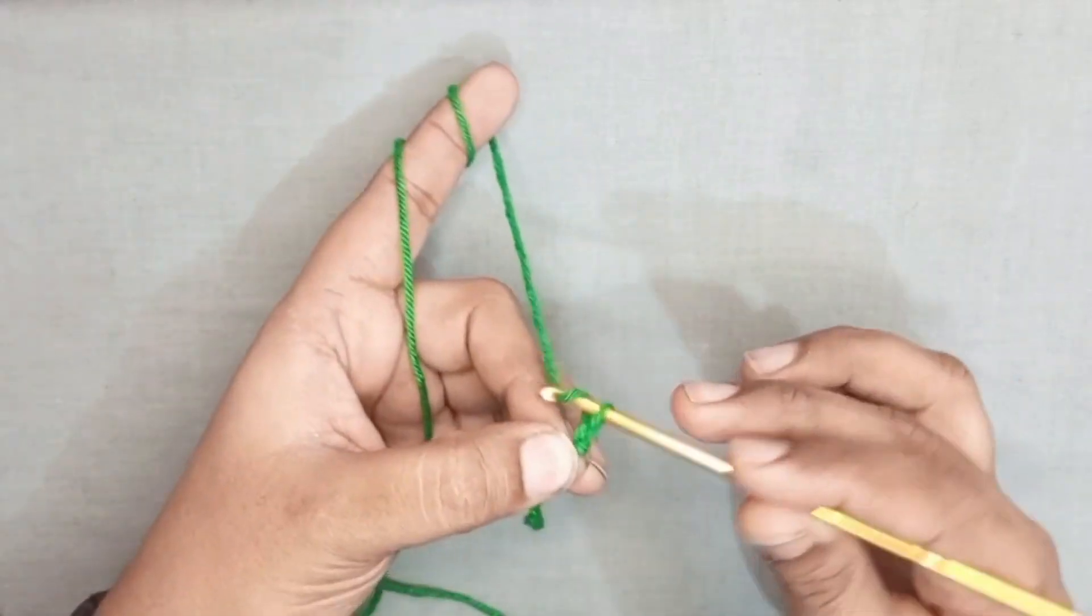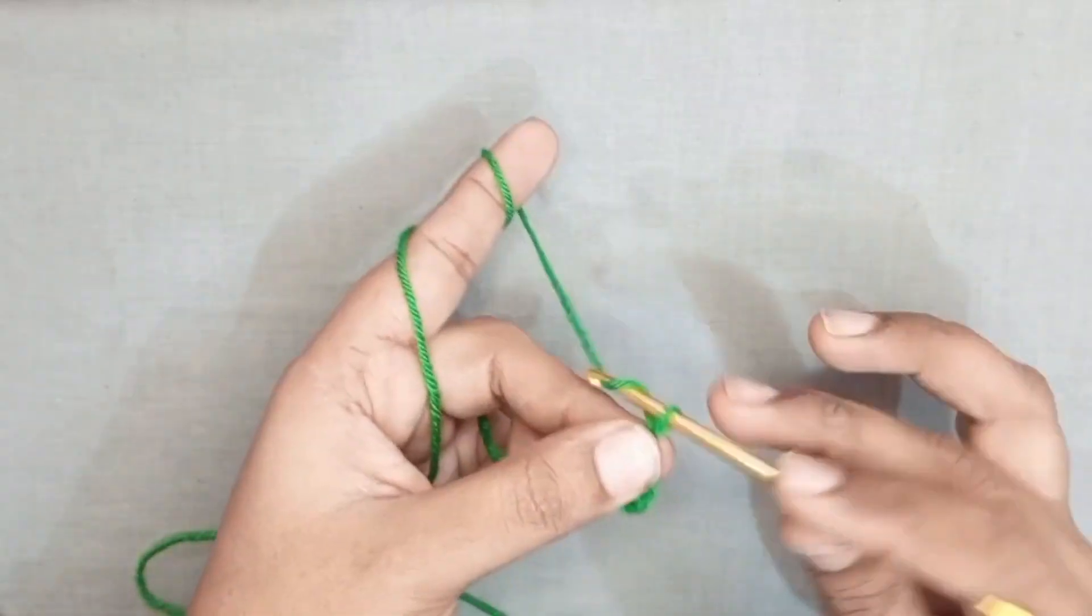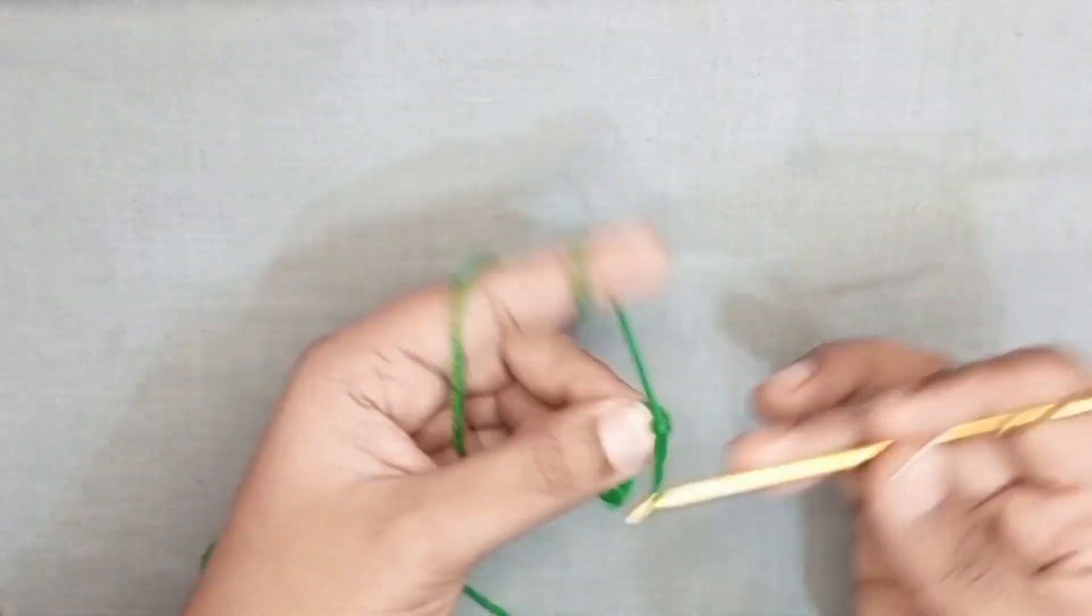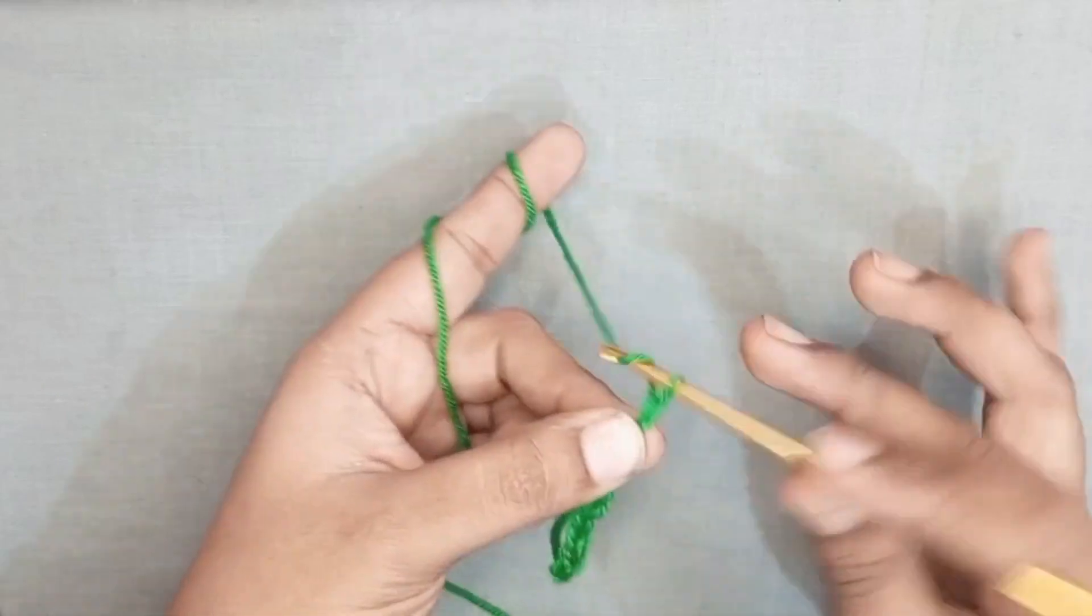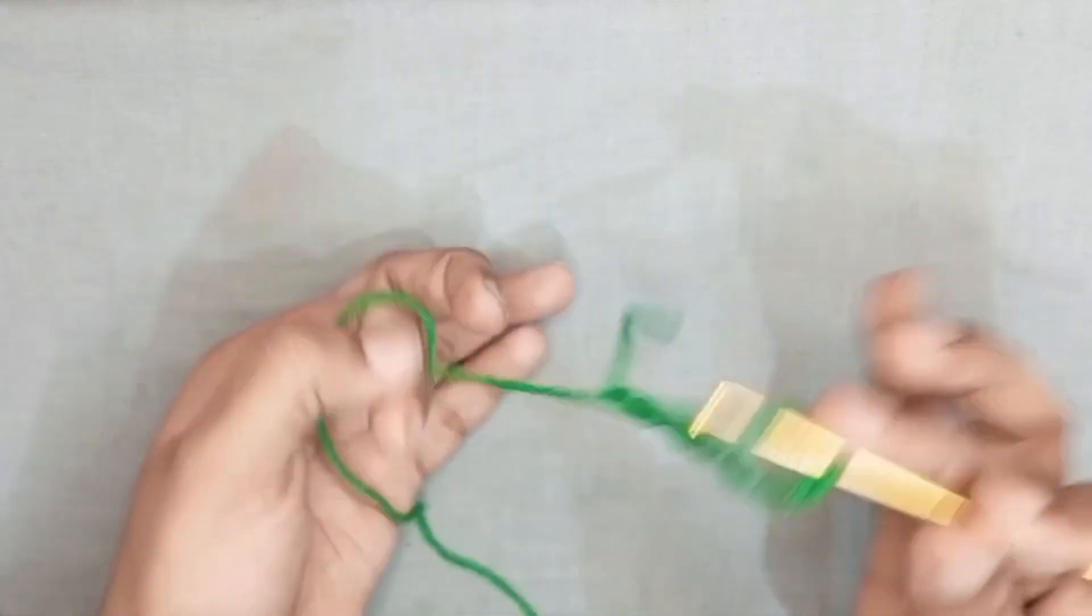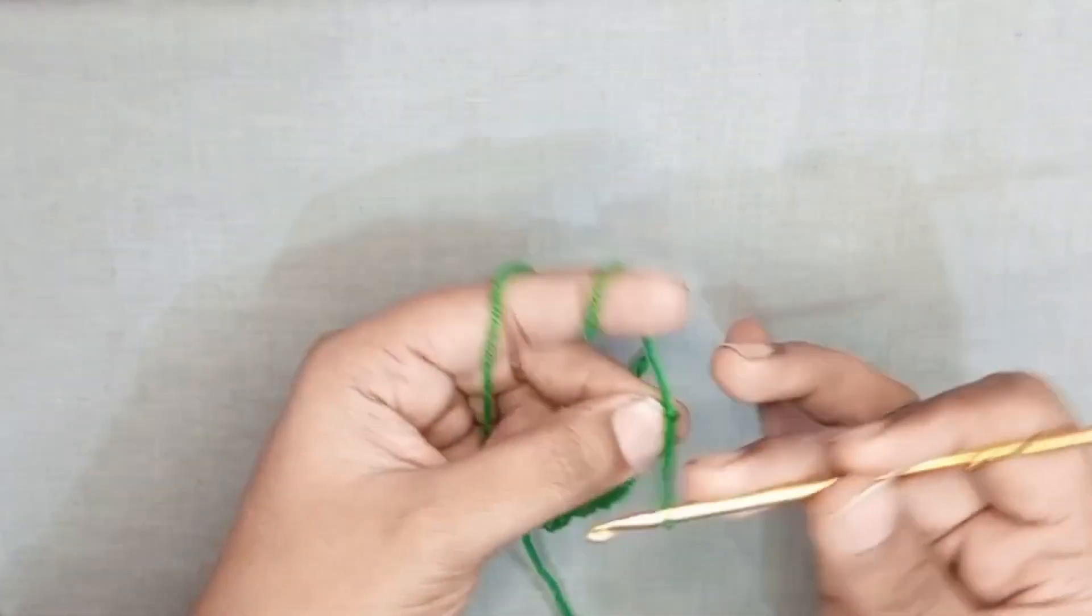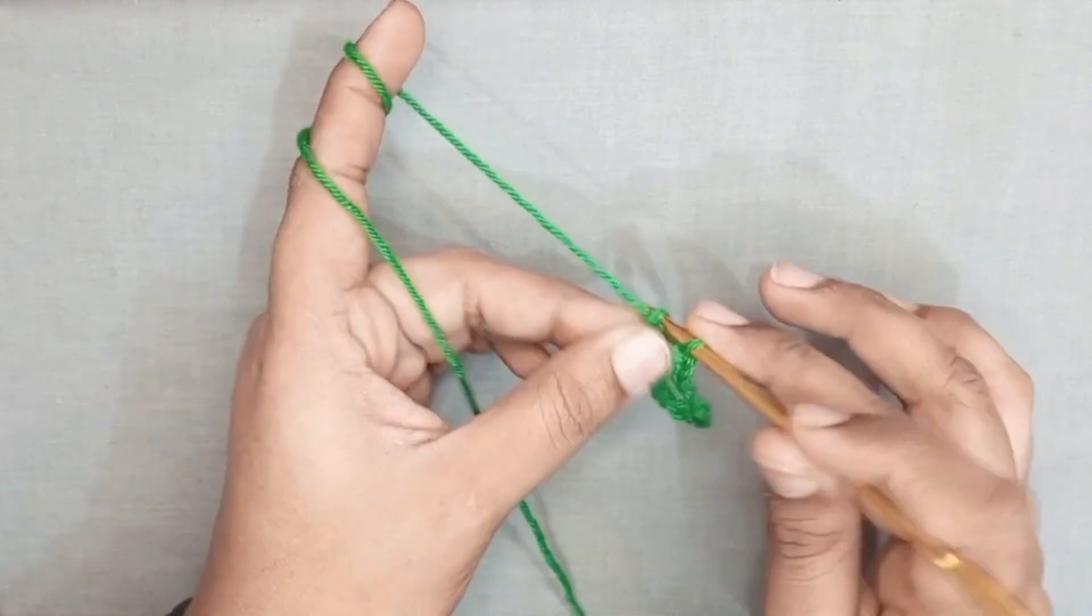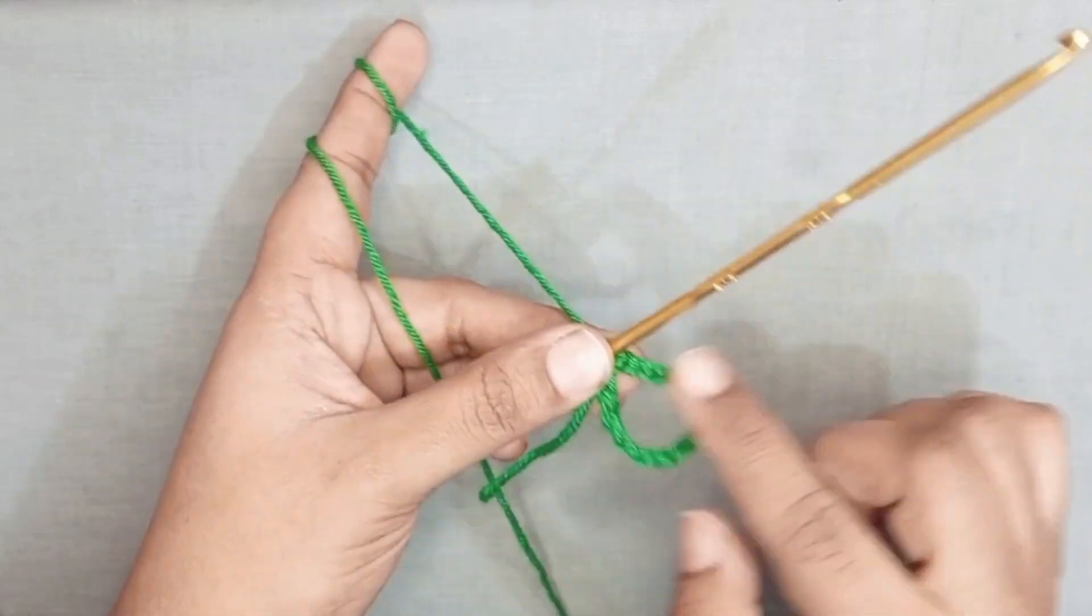Make 16 chain: 1, 2, 3, 4, 5, 6, 7, 8, 9, 10, 11, 12, 13, 14, 15, and 16. Make 16 chain, join together with slip stitch. Make like a ring. Chain 1.